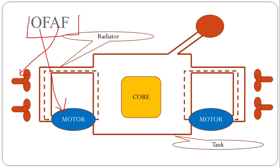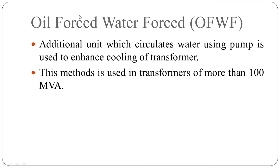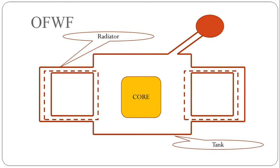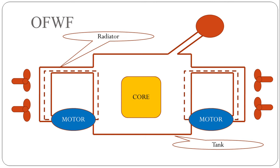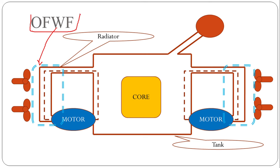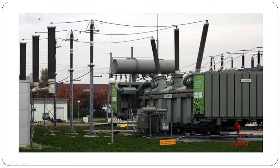The fourth method is oil forced water forced (OFWF) cooling. In this case, an additional unit which circulates water using a pump is used to enhance the cooling of the transformer. This method is used in transformers of more than 100 MVA. Starting from ONAN, adding fans gives ONAF, adding motors for oil circulation gives OFAF, and circulating water around the radiator gives oil forced water forced cooling. Here you can see blue dots showing water circulated around the radiators — this is called OFWF cooling.